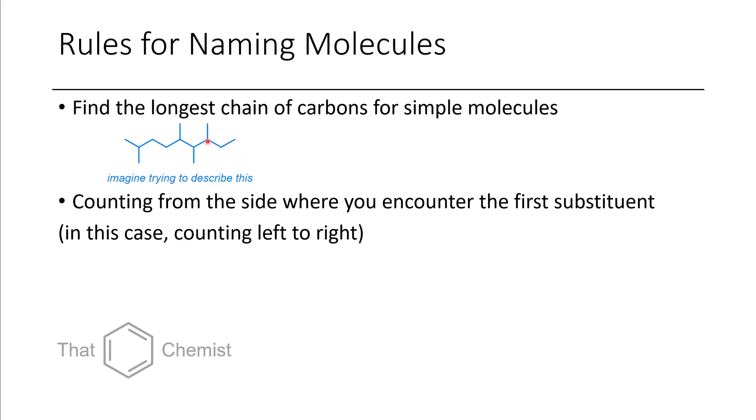When you encounter your first substituent, you want to prioritize counting that way. So here we have one, two, three, four, five, six, seven, eight, nine. The first substituent is in the two position.